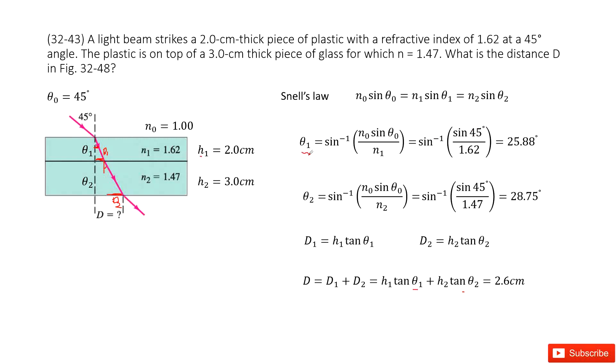So we can write the equation for theta 1 as the opposite sign. So n0 sine theta naught divided by n1, input given quantity, get answer there. Similarly, we can get theta 2 as this 28.75 degrees.